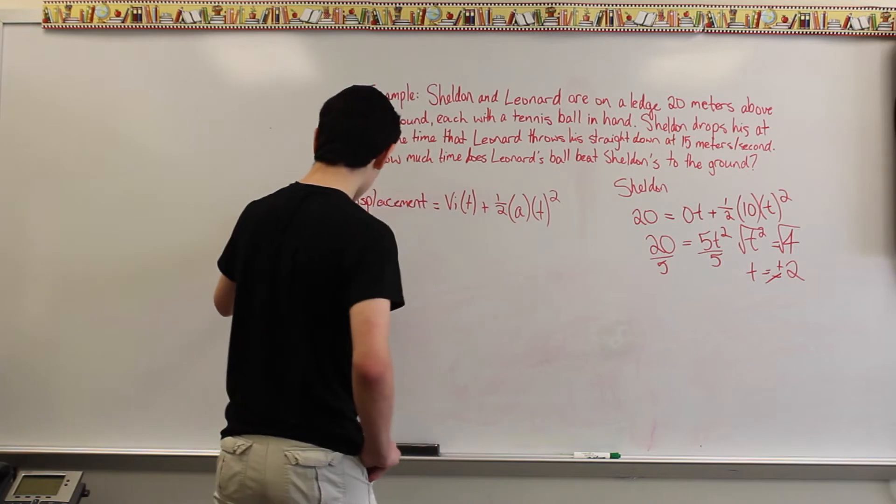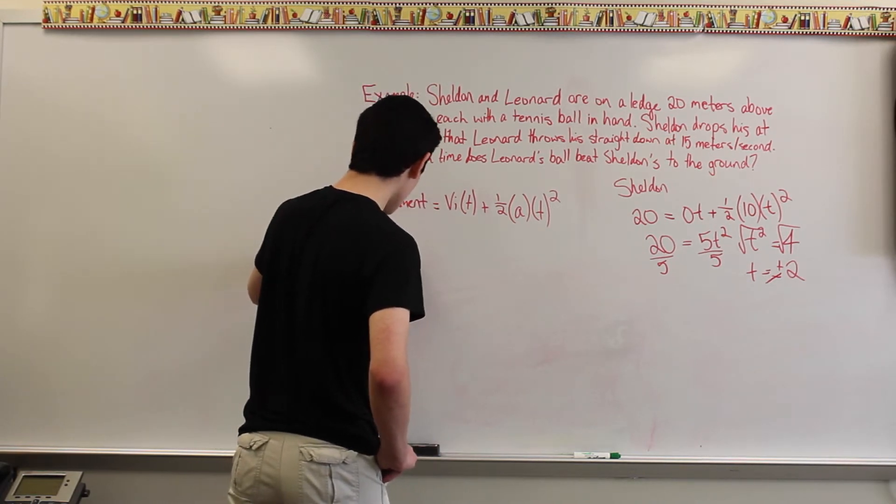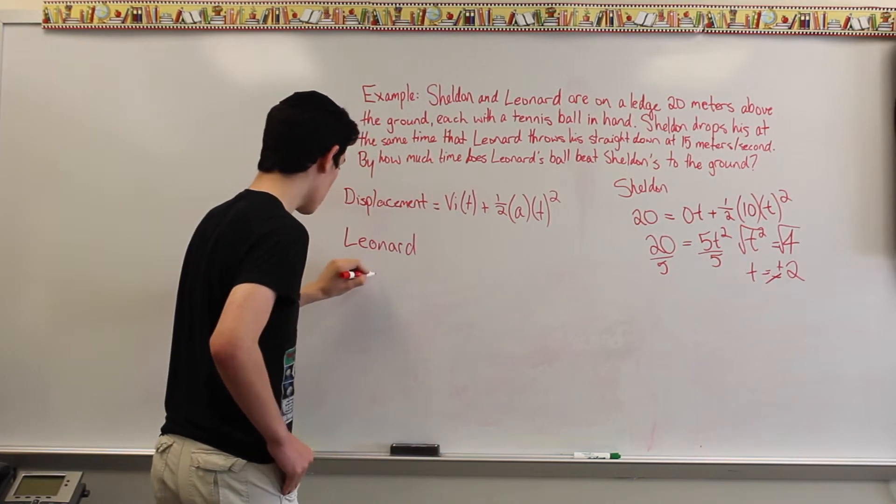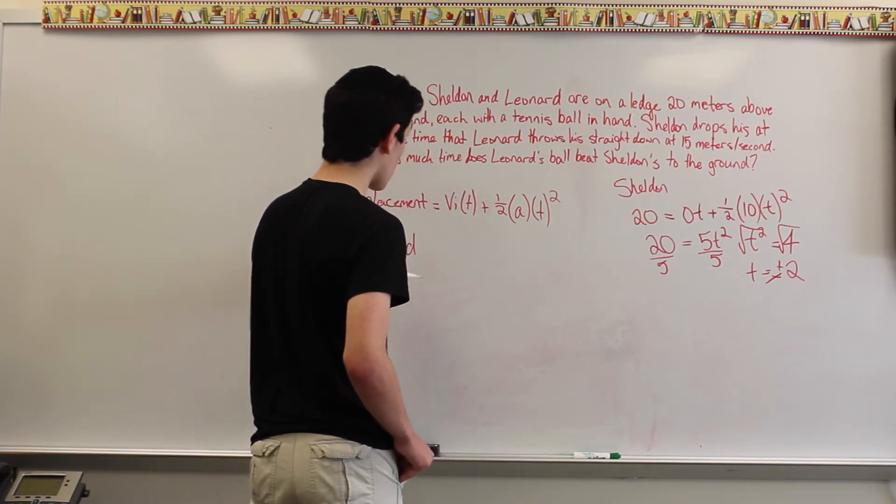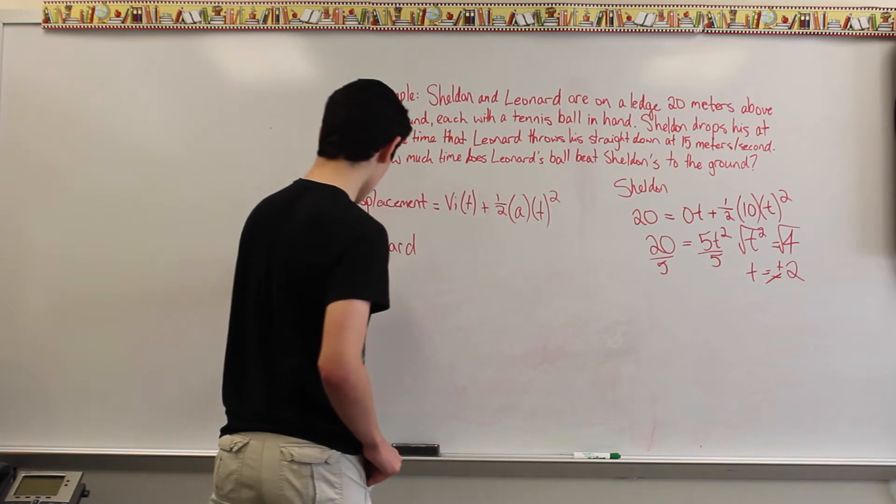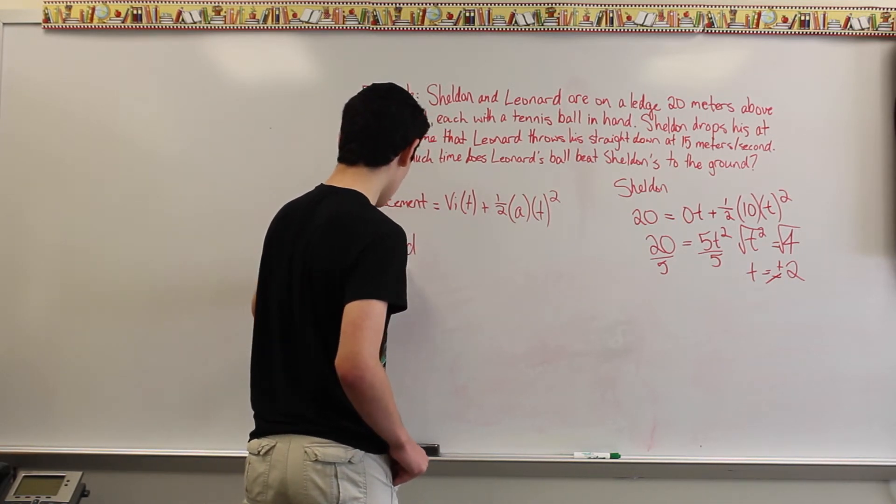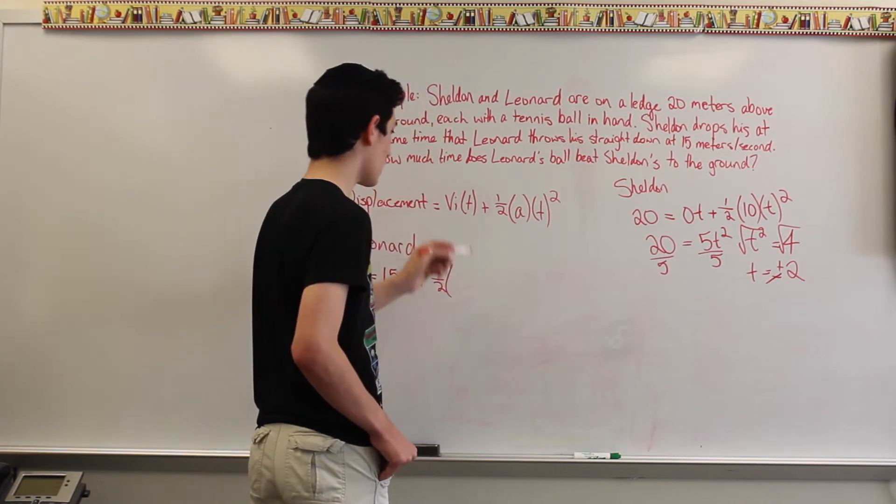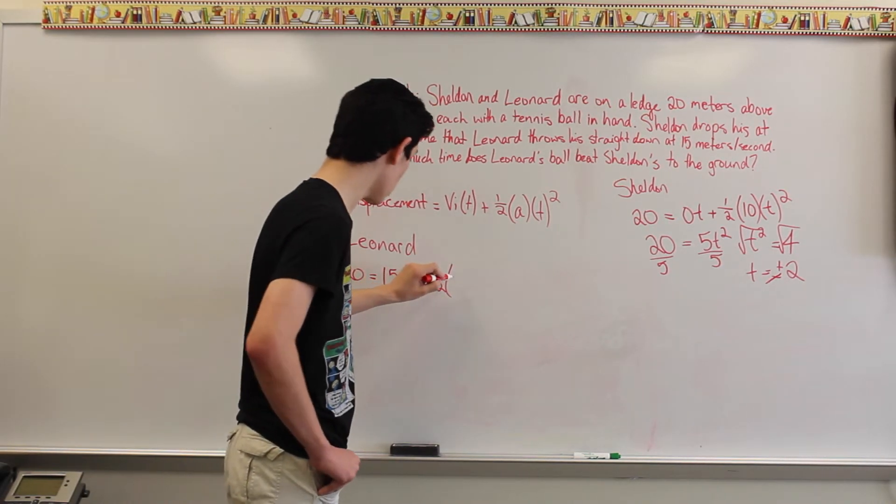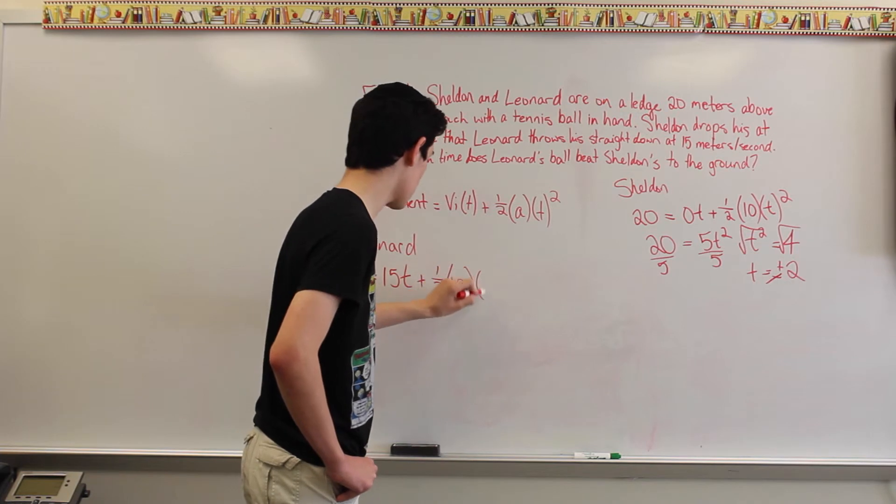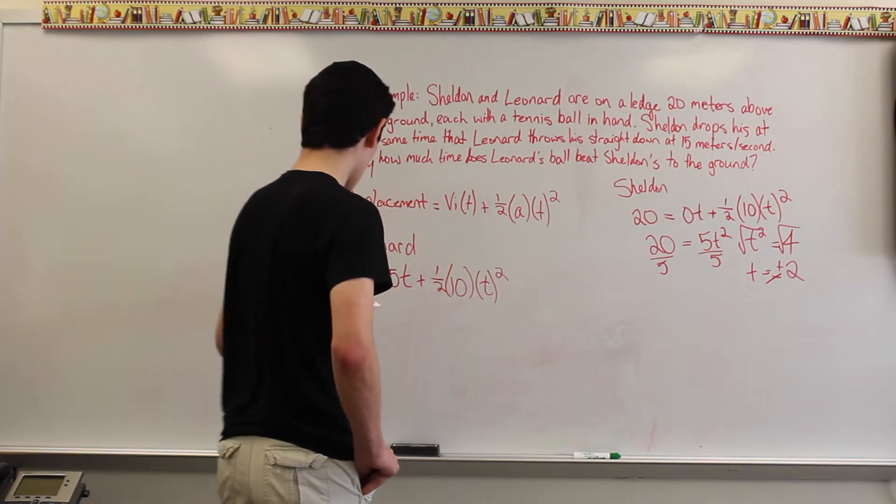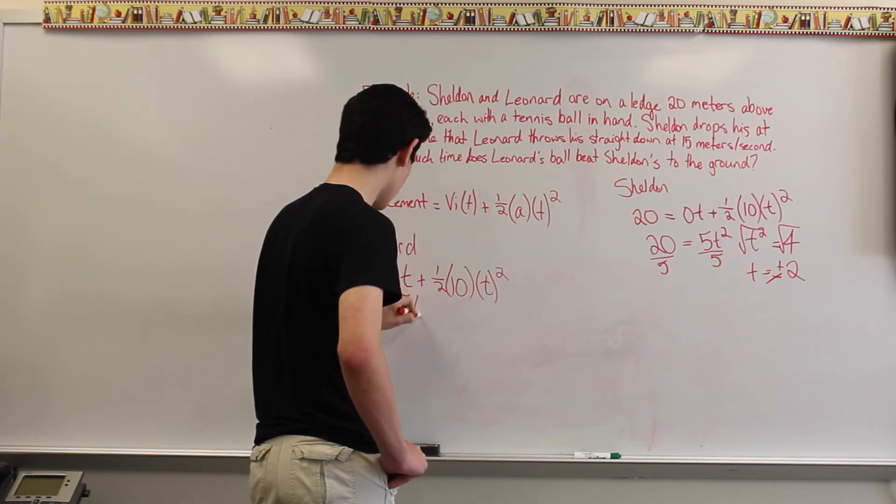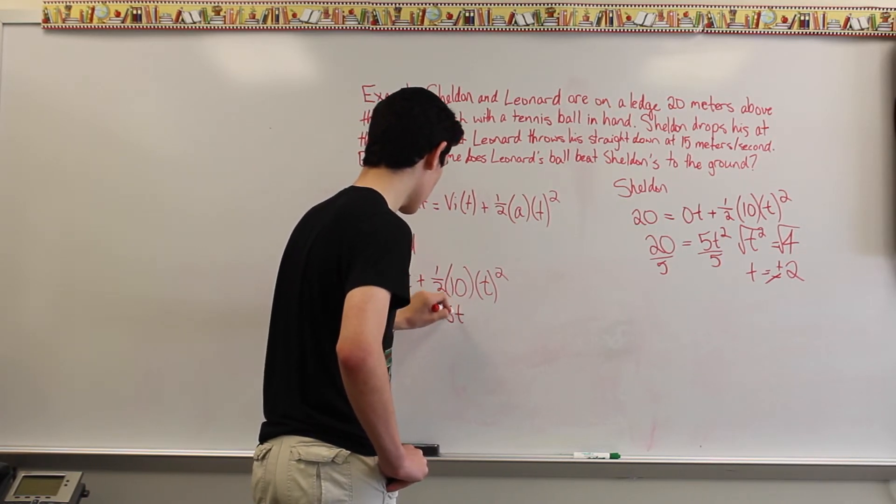Now, let's try to find Leonard's. So, Leonard's value has the same displacement, which is 20 equals the initial velocity, which the question states is 15 meters per second. So, 15 times t plus 1 half times acceleration, which again is 10 meters per second squared, times time squared. So, we have 20 equals 15t plus 5t squared.